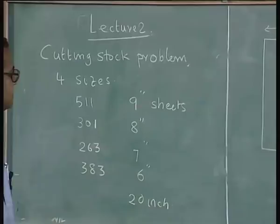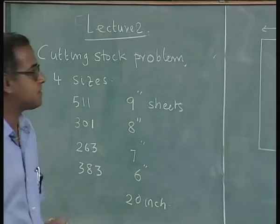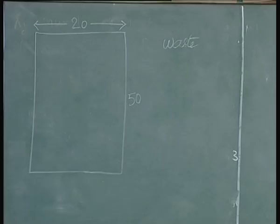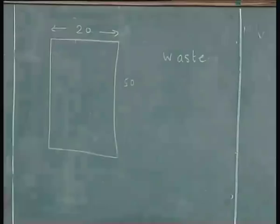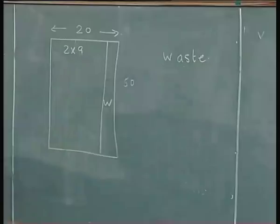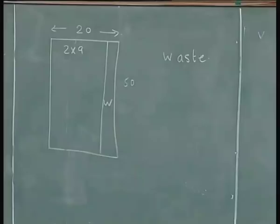The problem is to cut in such a way that we get 511 9-inch wide sheets, 301 8-inch wide sheets, 7-inch and 6-inch, and minimize the waste. The first thing we need to do is define what this waste is. Before that, let us see the number of ways of cutting — for example, cutting 2 into 9 will produce a 2-inch waste.